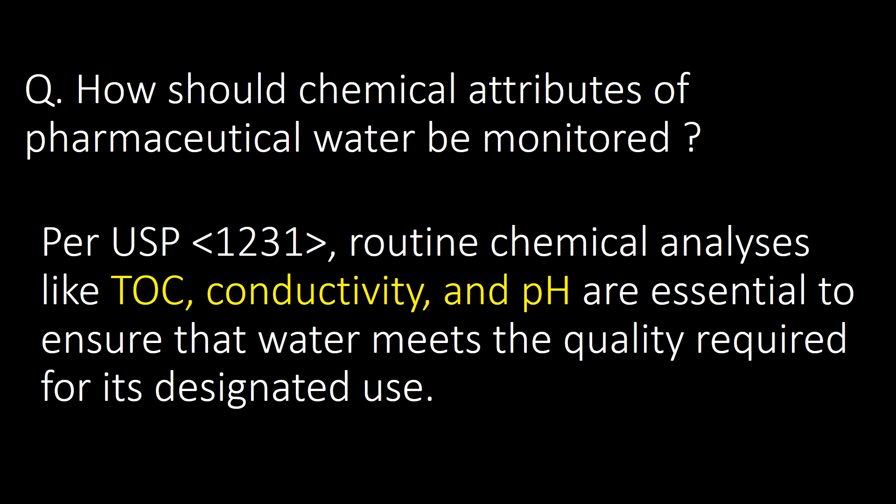How should chemical attributes of pharmaceutical water be monitored? As per USP chapter number 1231, routine chemical analyses like TOC, conductivity, and pH are essential to ensure that water meets the quality required for its designated use.